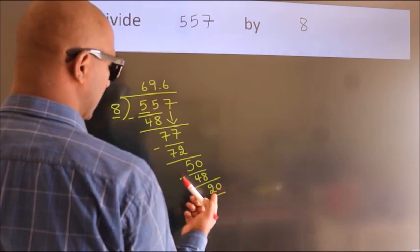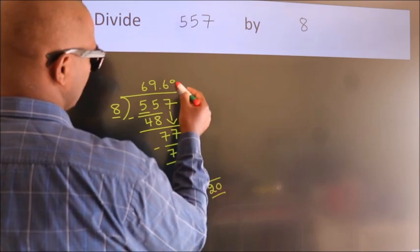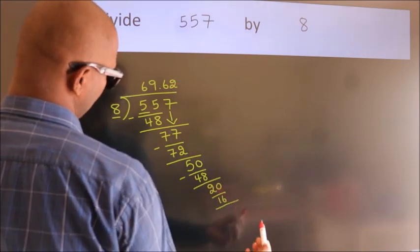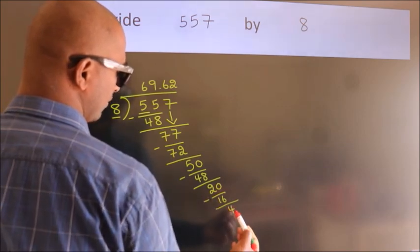A number close to 20 in the 8 table is 8 times 2 equals 16. Now we subtract. We get 4.